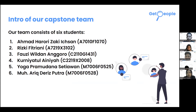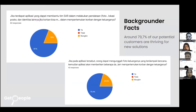two from cloud computing, and two from machine learning. Get People is an app where people can find their lost family who are affected by natural disaster by uploading their photos, and our machine learning algorithm will find the best match for them. Based on a survey we conducted, around 79.7% of our potential customers are seeking this new solution.